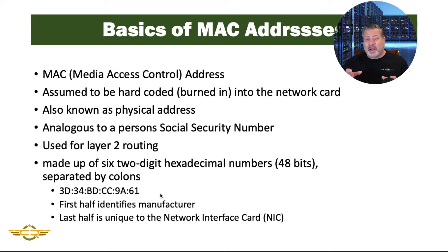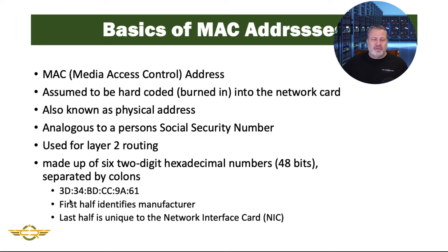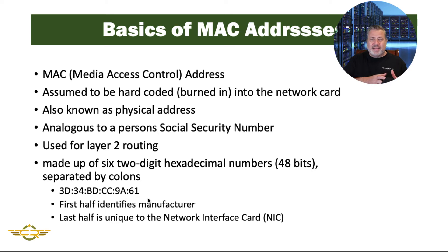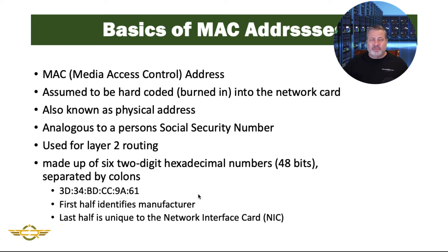It shouldn't change, but we're going to see there is a possibility to change it for some very specific reasons. The MAC address is used for our Layer 2 routing, and it's made up of six two-digit hexadecimal numbers, which turns out to be 48 bits long. It looks like the example here: 3D:34:BD:CC:9A:61, separated by colons. The first half, or the first three sets of two digits, makes up the manufacturer of the network card, and the last half is what makes that card unique. Put together, this should be a unique number, and we shouldn't see it on other network cards, although they can be changed.